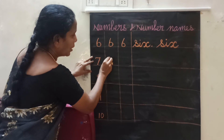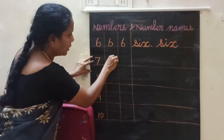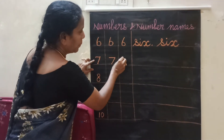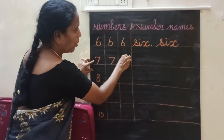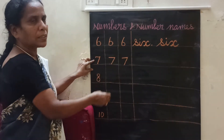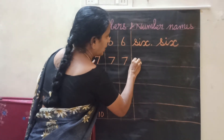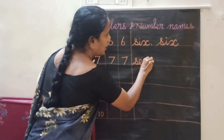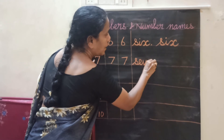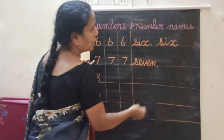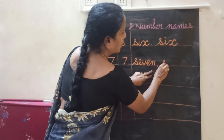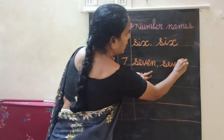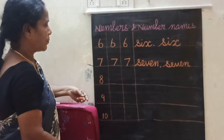1 sleeping line, 1 standing line. 1 sleeping line, 1 standing line. 7. S, E, V, E, N. 7. S, E, V, E, N. 7.